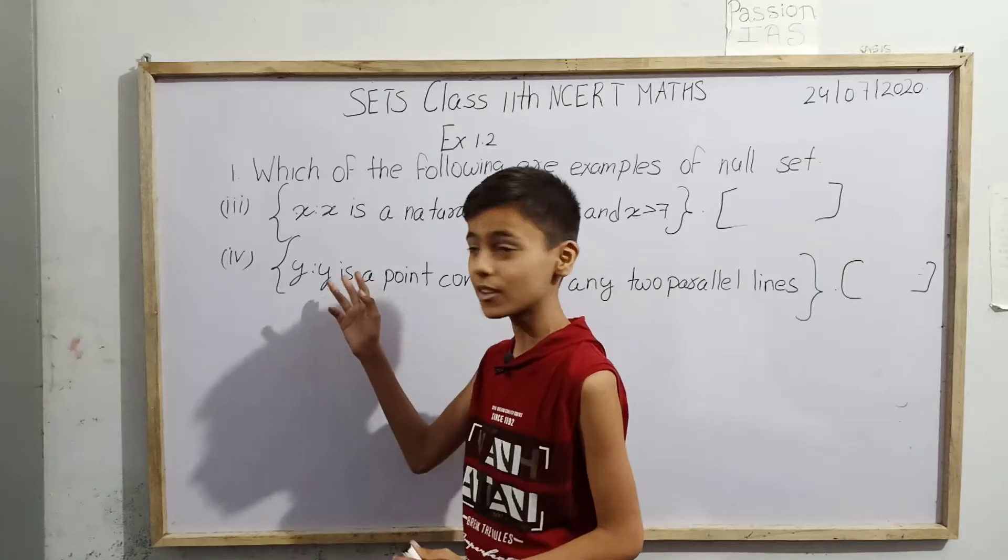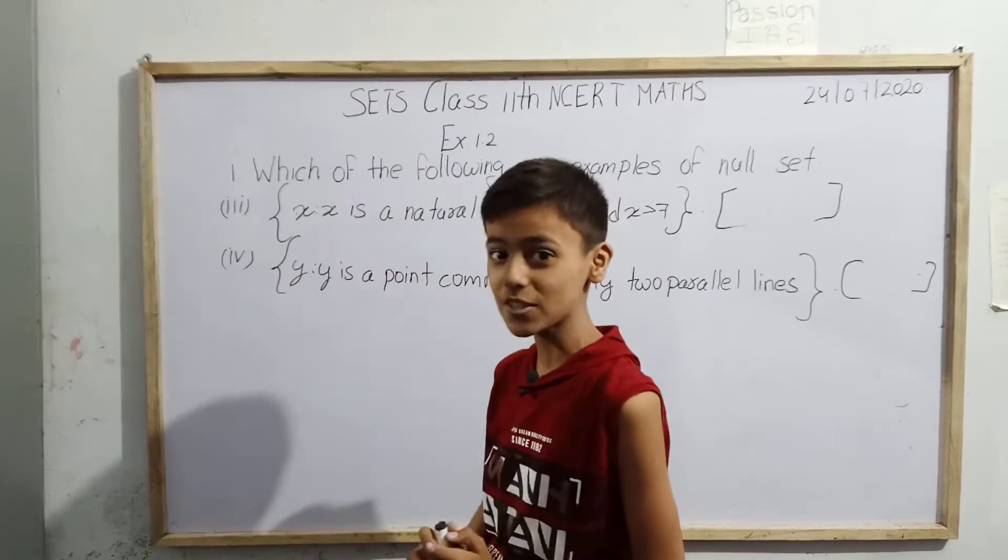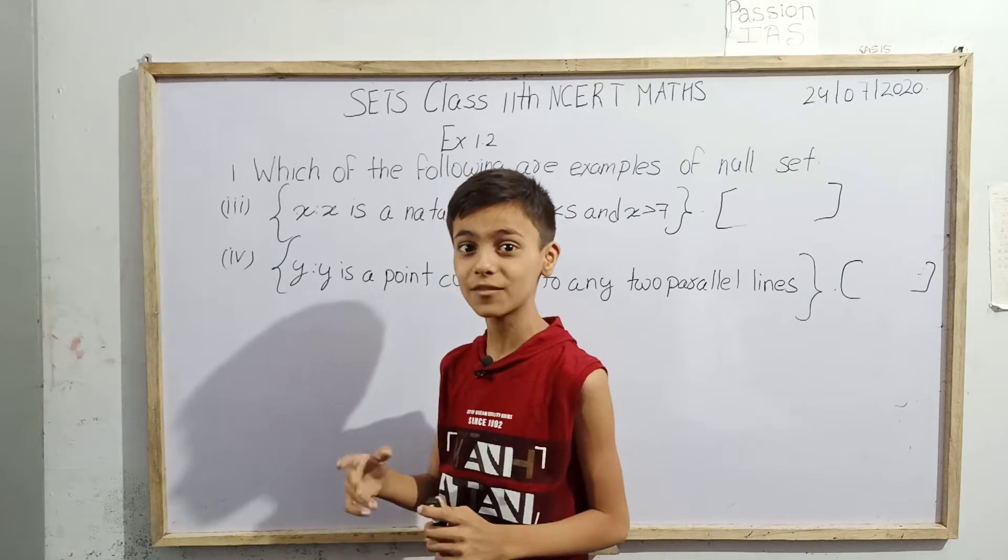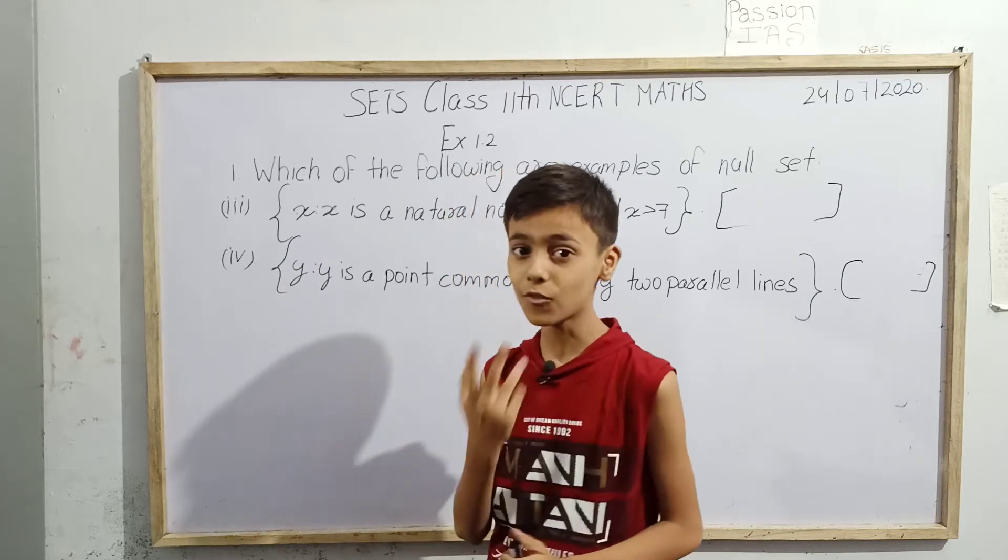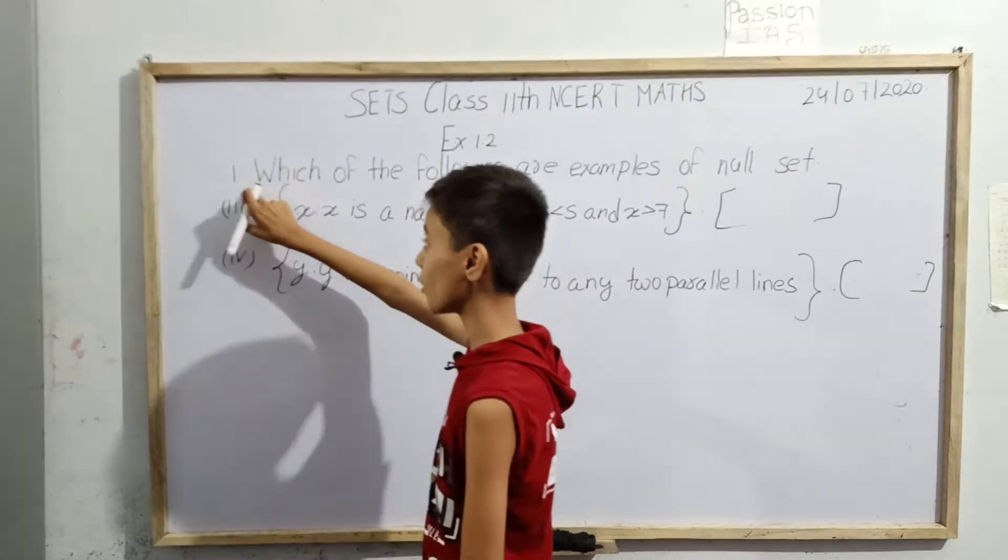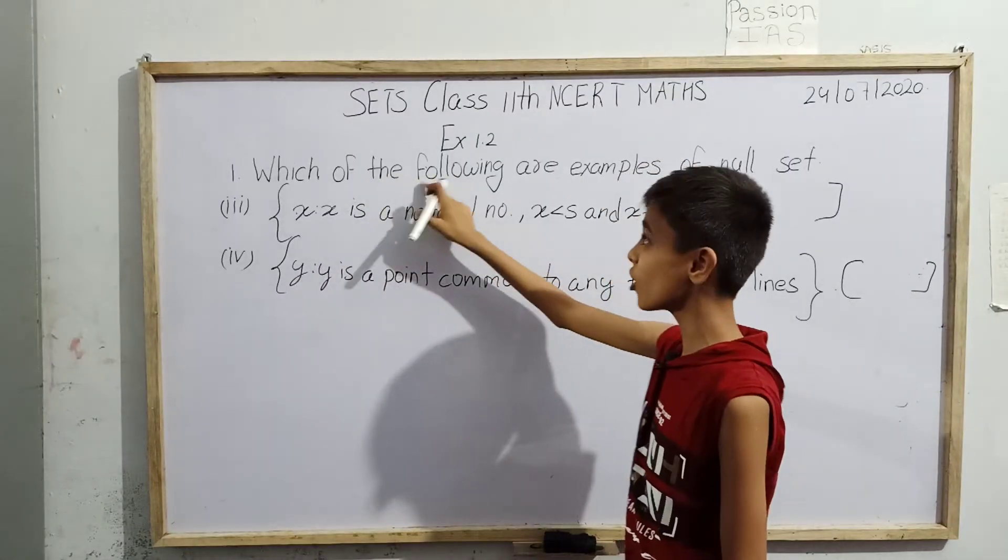In exercise 1.2, question number 1, there are total four questions. In this video we'll solve the rest of the two questions which we had left while solving the first two questions in the previous video. Here we have question number 1 asking which of the following are examples of null set.